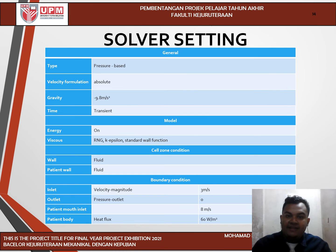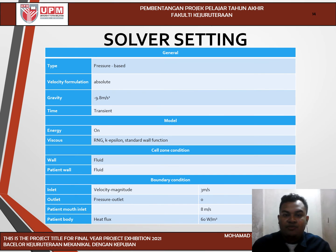This is the solver setting used in the simulation for the setup at the inlet, outlet, and patient mouth inlet. At the inlet, the velocity used for the air conditioner is 3 meters per second, and the flow from the patient's mouth when coughing is 8 meters per second.